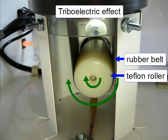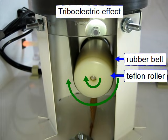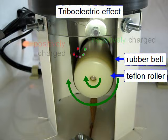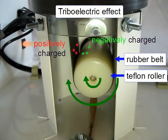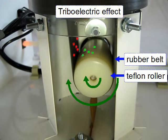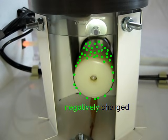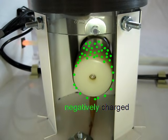Because this roller is Teflon and this belt is rubber, due to the triboelectric effect, electrons on the belt will move to the roller. This means the roller will become negatively charged, and the belt will become positively charged. We now have what we need for the next step: a charged roller, and in this case, one that's negatively charged.